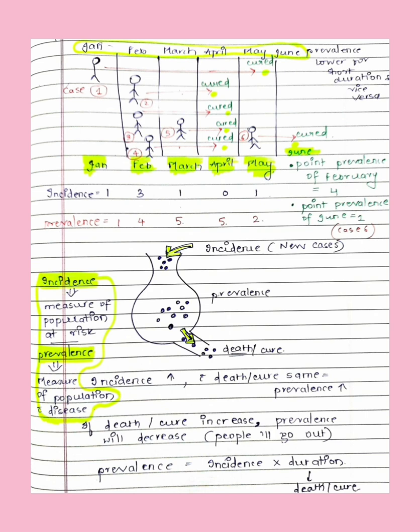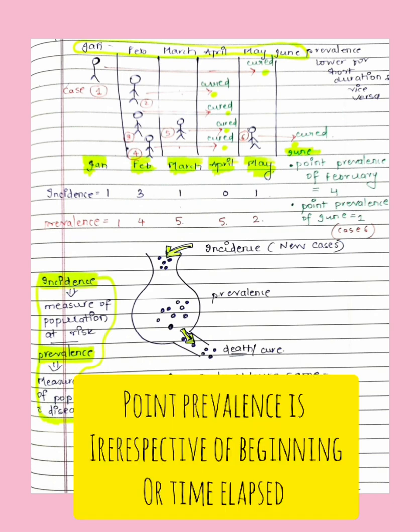Point prevalence is measured at a specific period of time. For example, point prevalence in January is one, and point prevalence in June is also one — since one case is still being treated. We can include old cases in prevalence. Point prevalence in February is four cases, since all four cases are prevailing at that specific point.